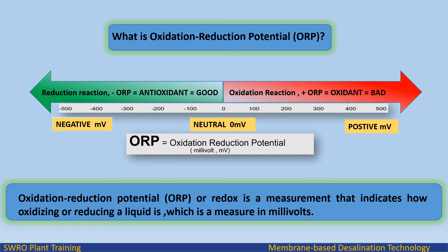Oxidation Reduction Potential, ORP or Redox, is a measurement that indicates how oxidizing or reducing a liquid is, which is measured in millivolts. The degree to which a fluid is oxidizing or reducing, represented by ORP, depends on the presence and strength of various oxidizing and reducing agents.